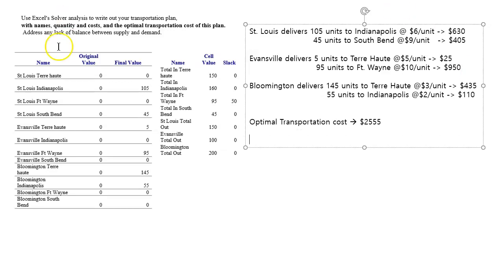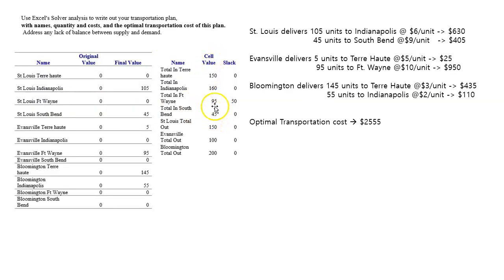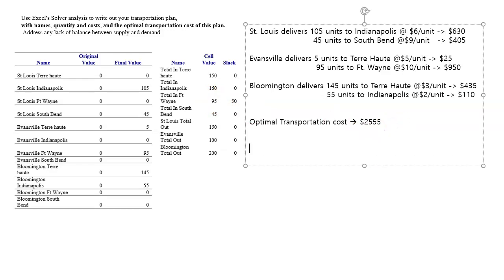It also said to address any lack of balance between supply and demand. Remember there was a 50-unit dummy variable. If you look at the solution, the dummy 50 is assigned to Fort Wayne, which means Fort Wayne will not receive the 145 units it requested. Originally Fort Wayne asked for 145, but the actual delivered value is only 95, meaning Fort Wayne received 50 units less than its demand.